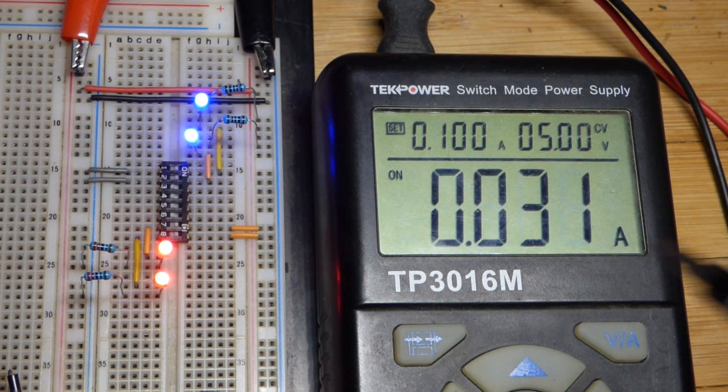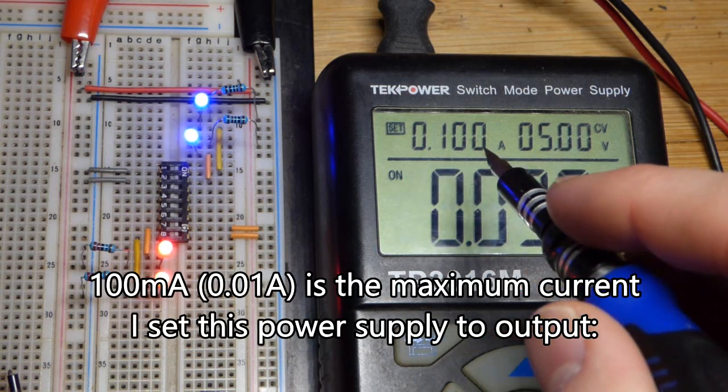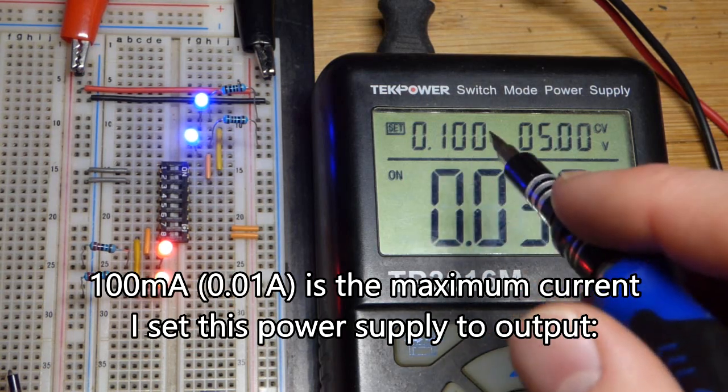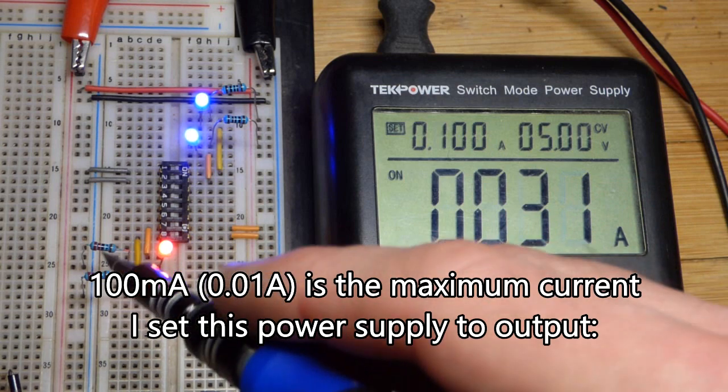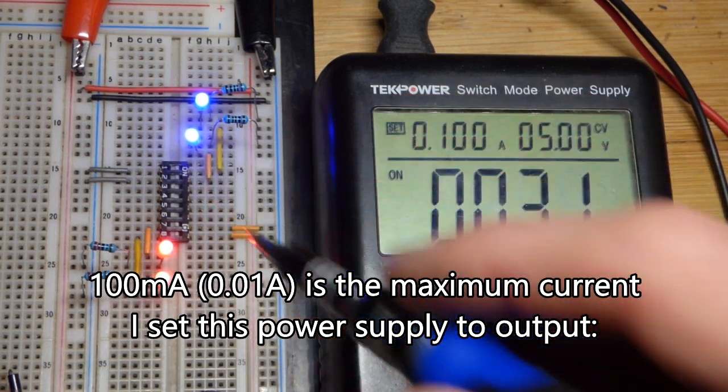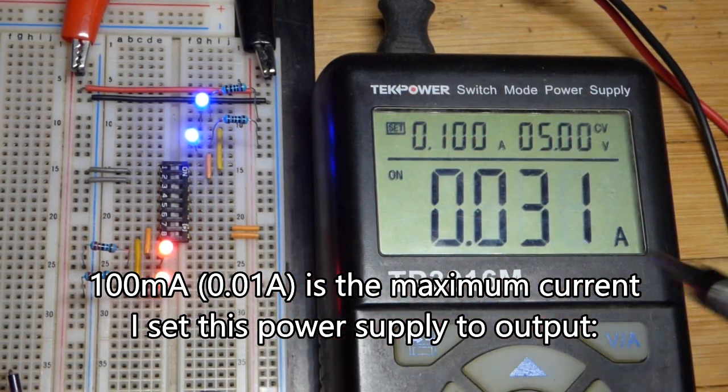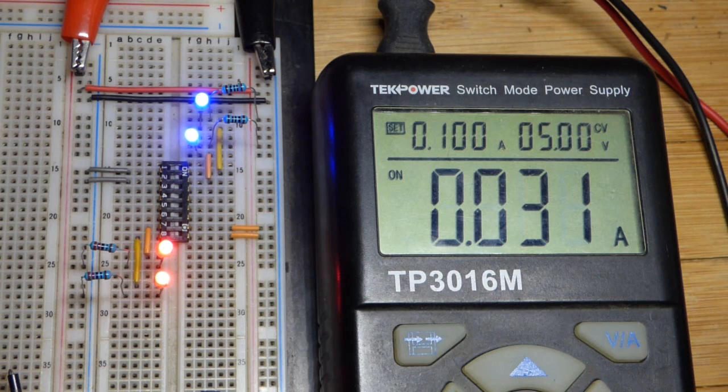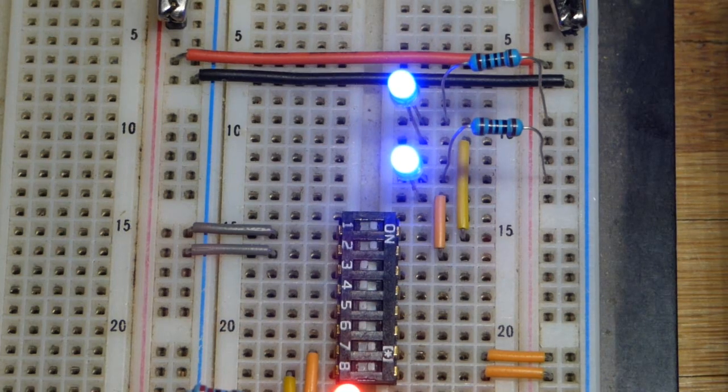Hopefully that makes sense. So I put 100 milliamps because I was thinking if I use 220 ohms along the whole route there, that we could get closer to 80, maybe like 60 milliamps of current. But I decided not to go that route, so hopefully that makes sense.